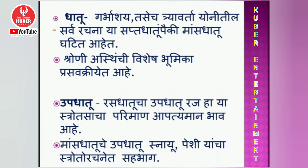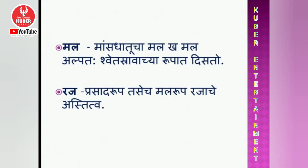Role of dhatu and upadhatu. Garbhashayam and all structures of Arthavavah strotas are constituted by Mausa dhatu. Asthi dhatu situated in Shroni plays a major role in Prasuti Kriya. Upadhatu: Raja is upadhatu of Rasadhatu, which is the main factor of this strotas. Snayu and Peshis are upadhatu of Mausa dhatu, which form a supportive unit of this strotas. Kha mala is the secretion in cavities which is supposed to be excreted after lubrication of that organ; it is produced by Mausa dhatu. The normal white discharge per vagina which is less in amount and excretes without itching, pain or burning is the mala related with Rajavah Strotas. The two types — Prasadarupa and Mallarupa — are also concerned.